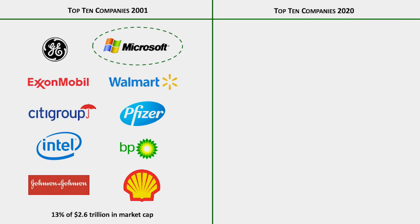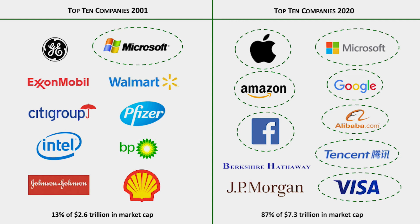Every single portfolio company needs to be thinking about developing network effects, regardless of whether they're an internet company, software company, medical device company, or consumer company. Think back 20 years ago — the top 10 companies by market cap totalled about $2.5 trillion, and only Microsoft had network effects as a core competitive advantage. Fast forward 20 years and $7.5–8 trillion of market cap: eight of the top 10 companies now have network effects as their core advantage — Facebook, Google, Alibaba. These are generational, transformational companies driven fundamentally by network effects.